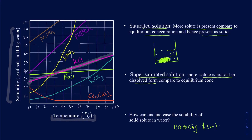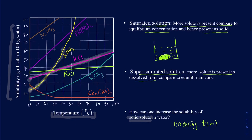KNO₃ shows a more significant increase in solubility with temperature. At around 10°C you can dissolve about 16 grams, but at 40°C you can dissolve almost 60 grams of KNO₃ in 100 grams of water — a significant increase. This holds true for solid solutes. For gas solutes, it's actually the opposite, which I'll cover in a different session.